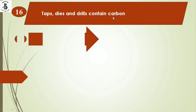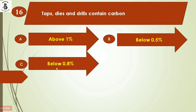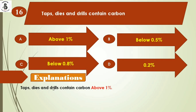The next question: taps, dies, and drills contain carbon option A) above 1%, option B) below 0.5%, option C) below 0.8%, option D) 0.2%. Taps, dies, and drills contain above 1% carbon, classifying them as high-carbon steel. A higher carbon percentage is required because these are cutting and production tools. The right answer is option A.